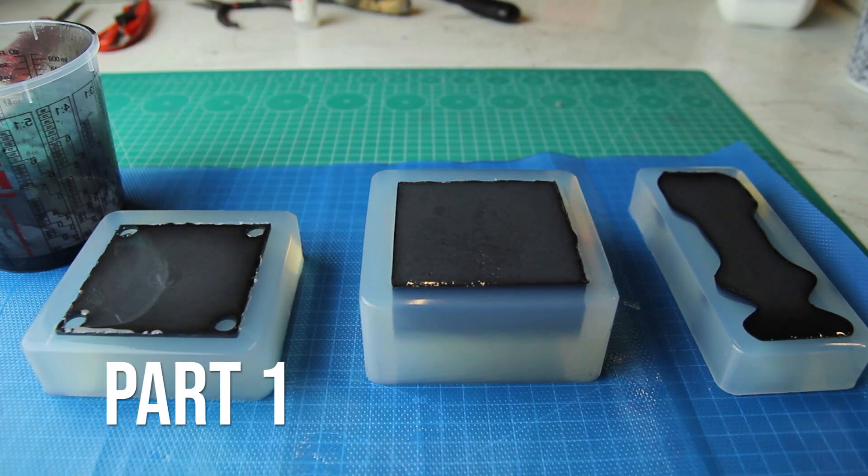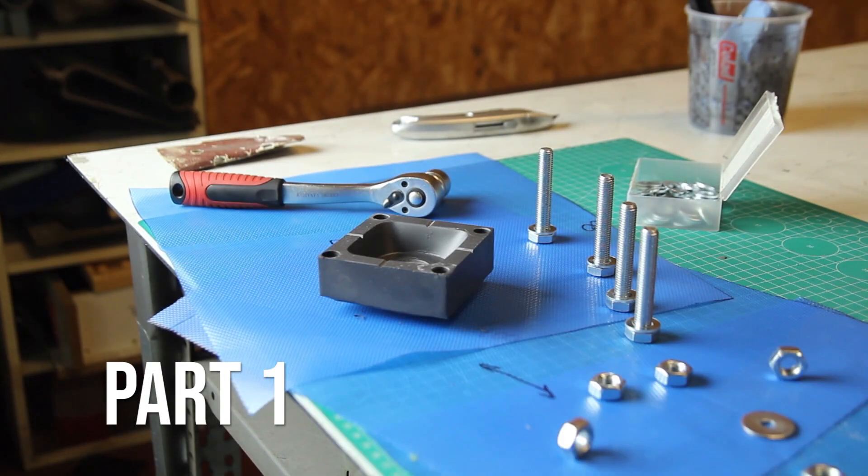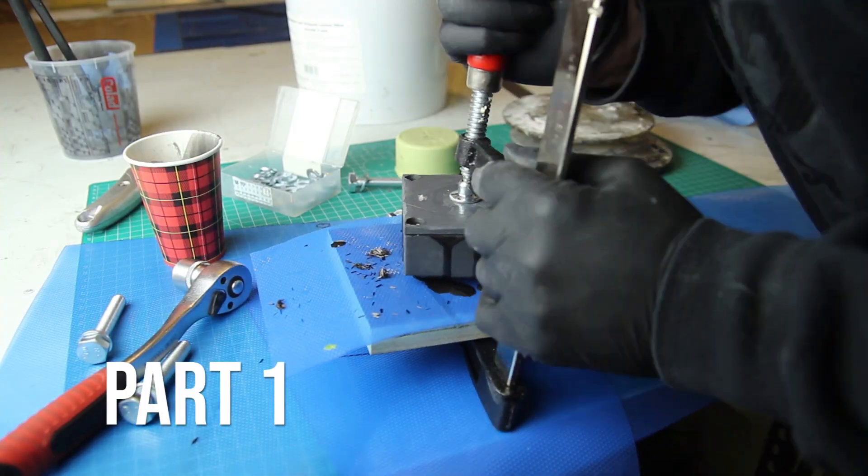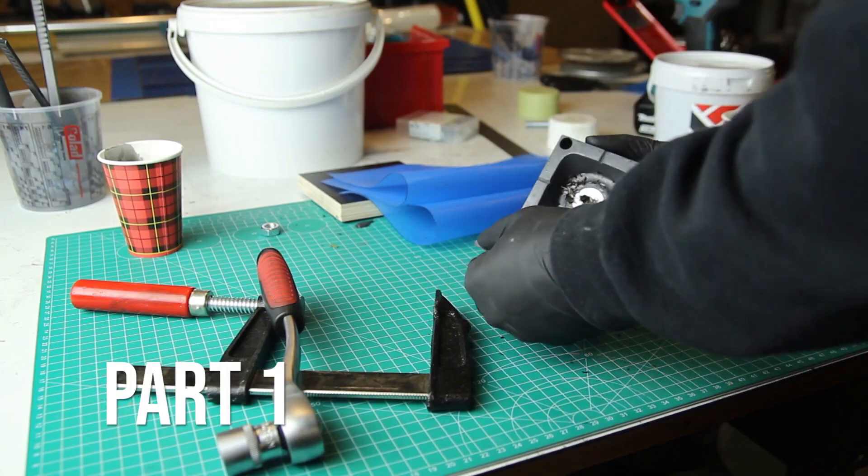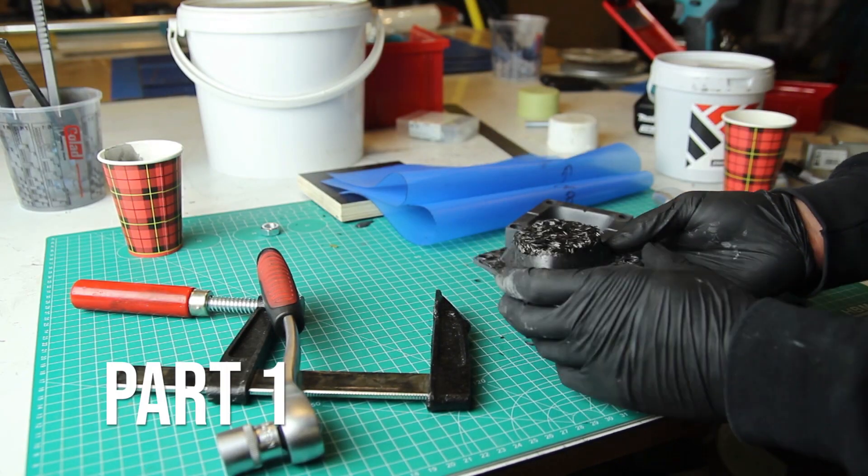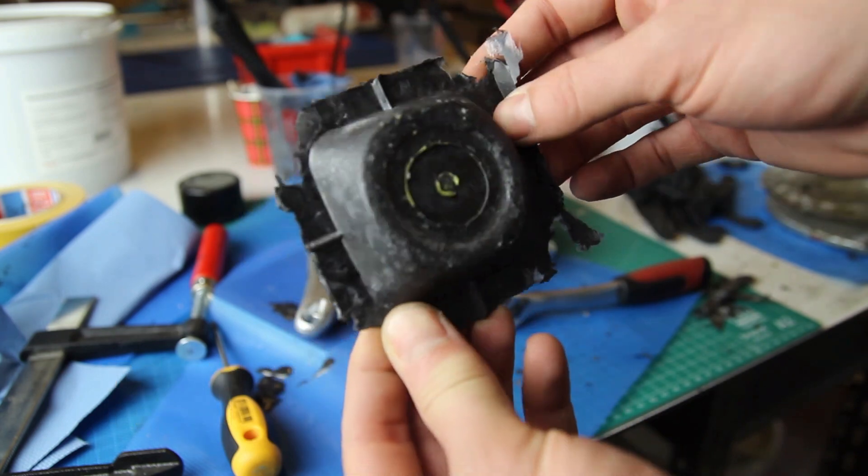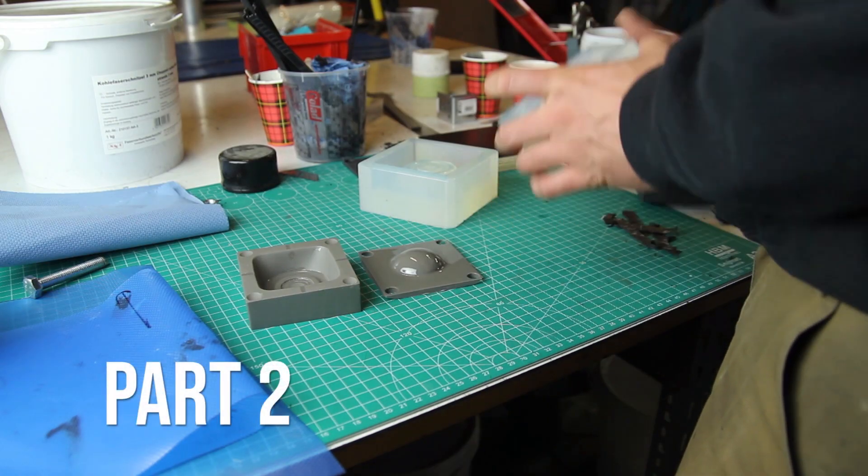We'll be making some 3D printed parts, molds, then we'll have the first trial pieces as a mold to make the parts off. And then in the second part I'll take you through the more finished parts, so how to do it properly. So this is more like the trial and error to get it right.